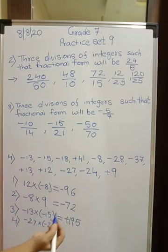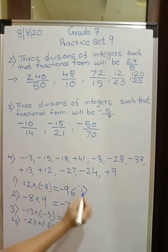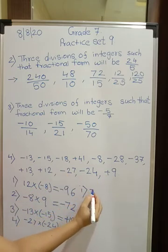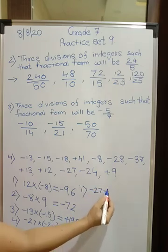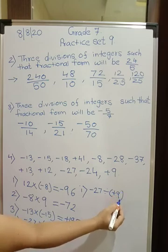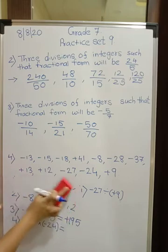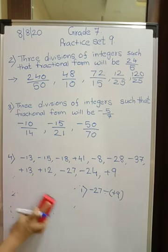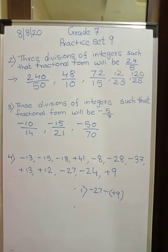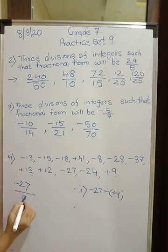Similarly divisions we will do. This is multiplication we have done. Now let us go for divisions also. Now divisions also, first we will do divisible numbers you choose. Minus 27 divided by plus 9, divide by plus 9. So I am just erasing this now. We will carry out division and I will show you.